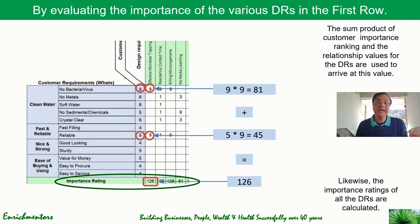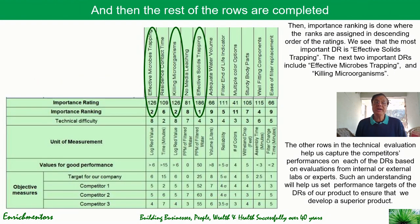For example, looking at the 'effective microbe trapping' design requirement: the relationship matrix weight is 9 and the customer importance is 9, so 9 × 9 = 81. The next relationship is 9 again on the 'reliable water purifier' requirement, so 9 × 5 = 45, giving 126 total importance rating. Calculating all rows in this way, we get importance ratings for each design requirement: 126, 109, 126, 81, and so on, with 186 for 'effective solid trapping' being the highest ranked, followed by 'killing microorganisms' and 'effective microbe trapping'.